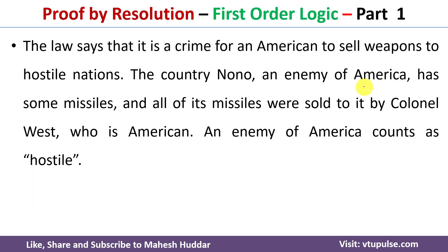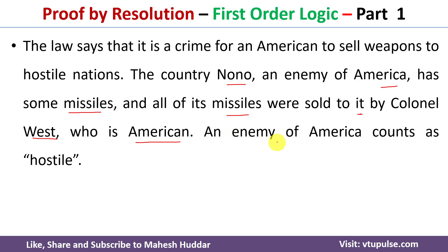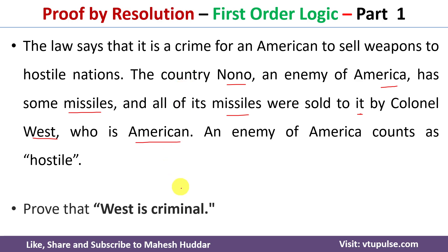The problem definition is as follows. The law says that it is a crime for an American to sell weapons to hostile nations. The country Nono is an enemy of America, has some missiles, and all of its missiles were sold to it by Colonel West, who is an American. An enemy of America counts as hostile.